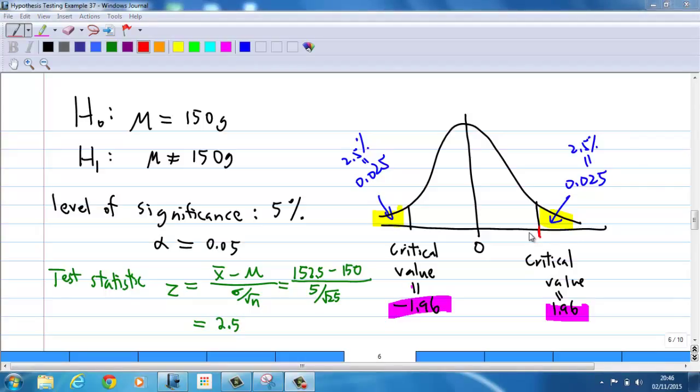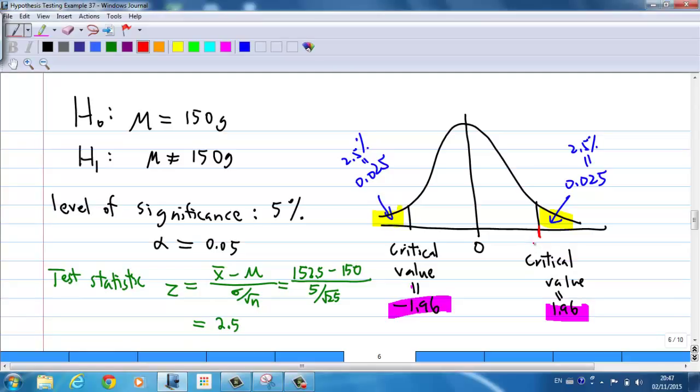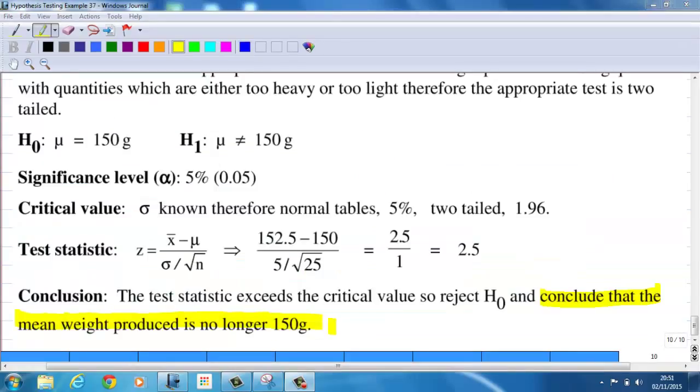We notice that the critical value is 1.96 here, and the test statistic is 2.5, which is to the right of 1.96. Therefore, the test statistic is inside the critical region, the shaded yellow part. The conclusion is to reject the null hypothesis. Therefore, we conclude that the mean weight produced by the machine is no longer 150 grams.